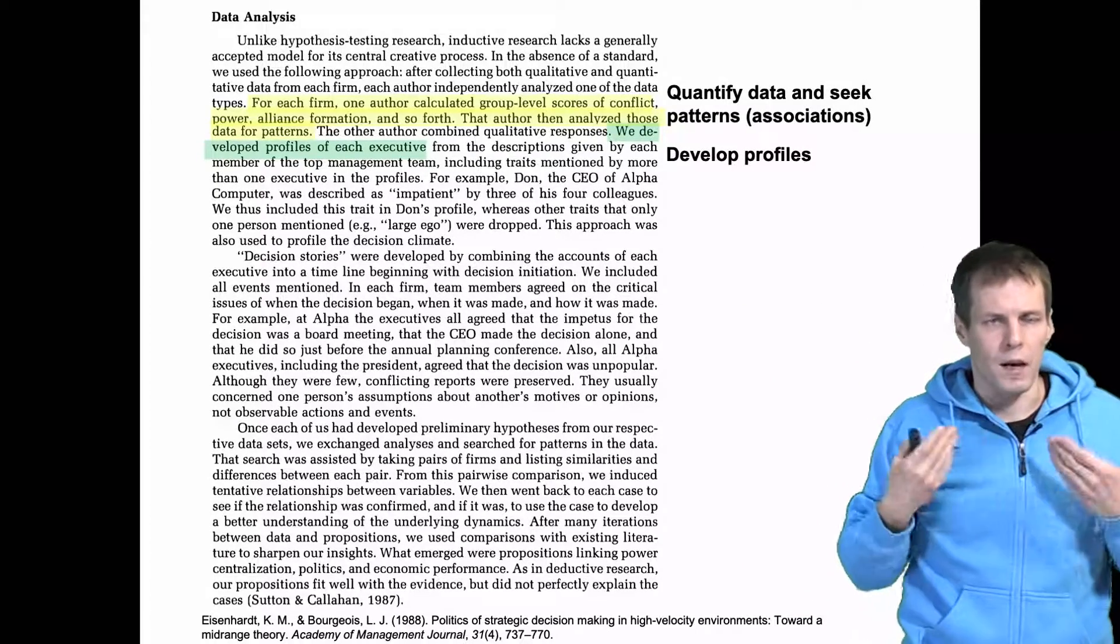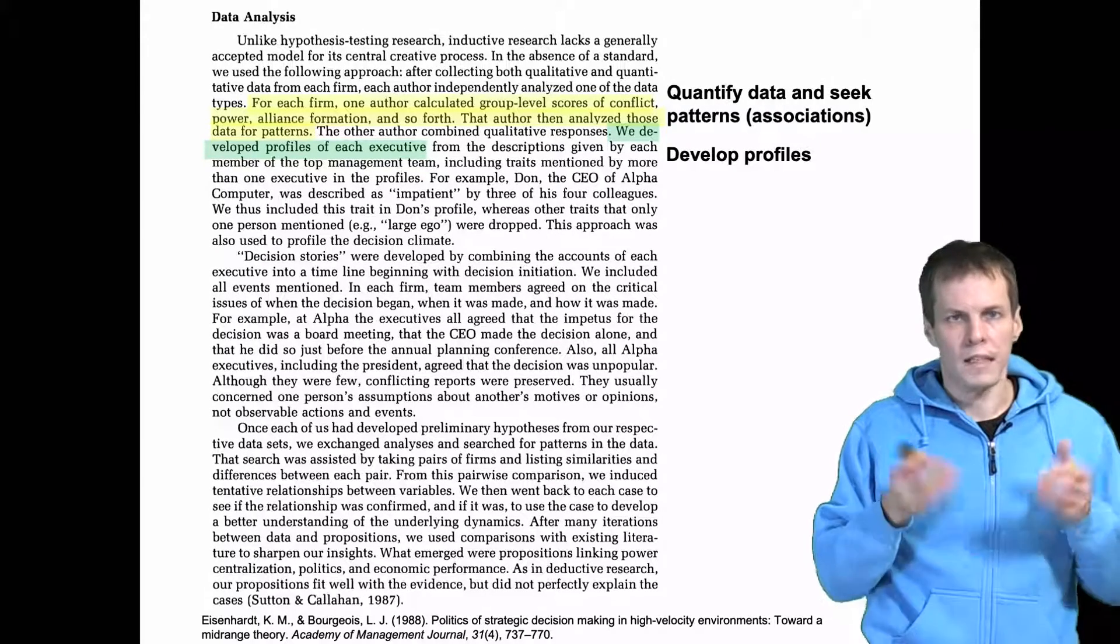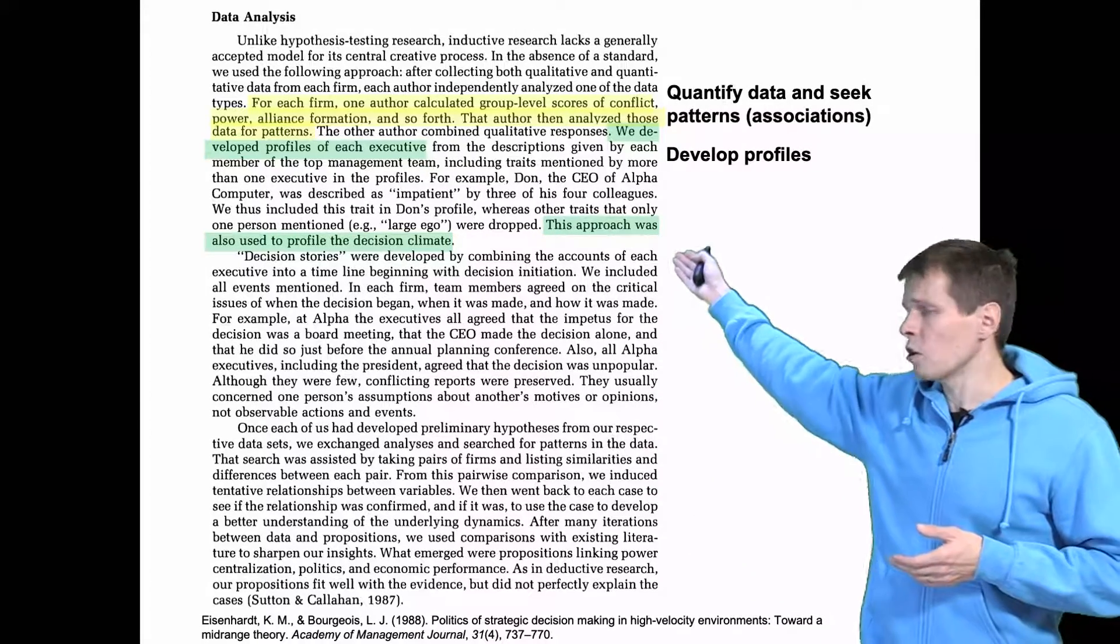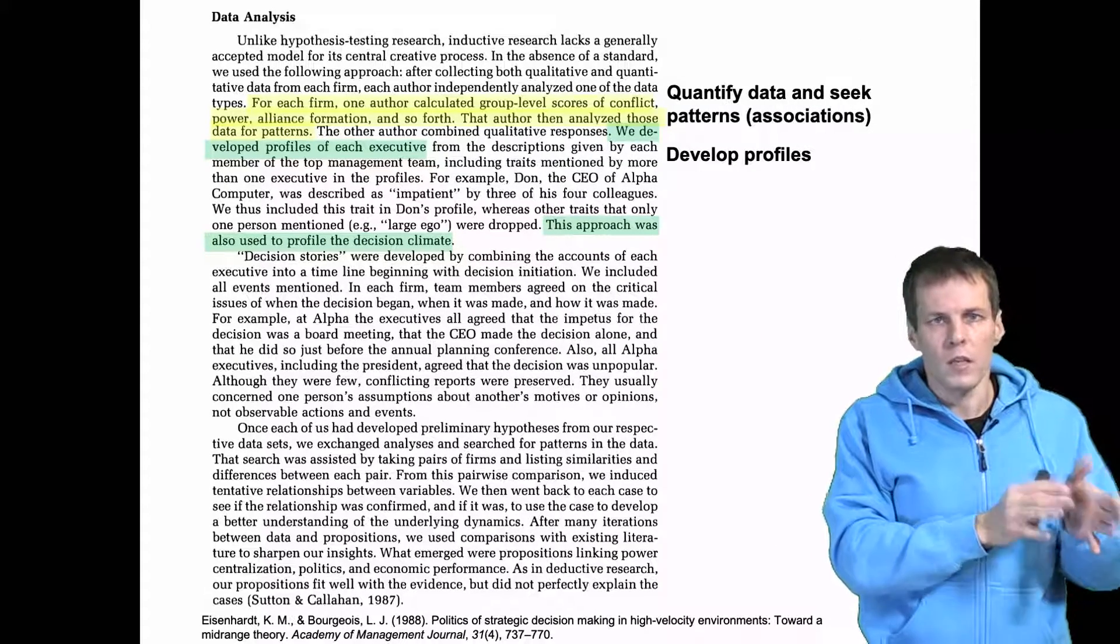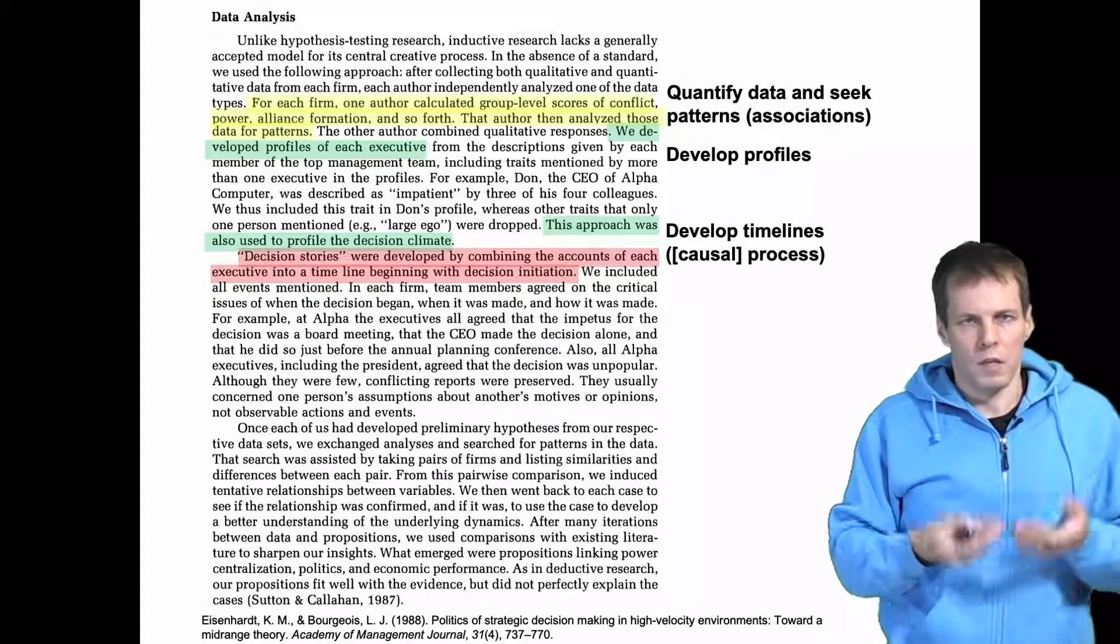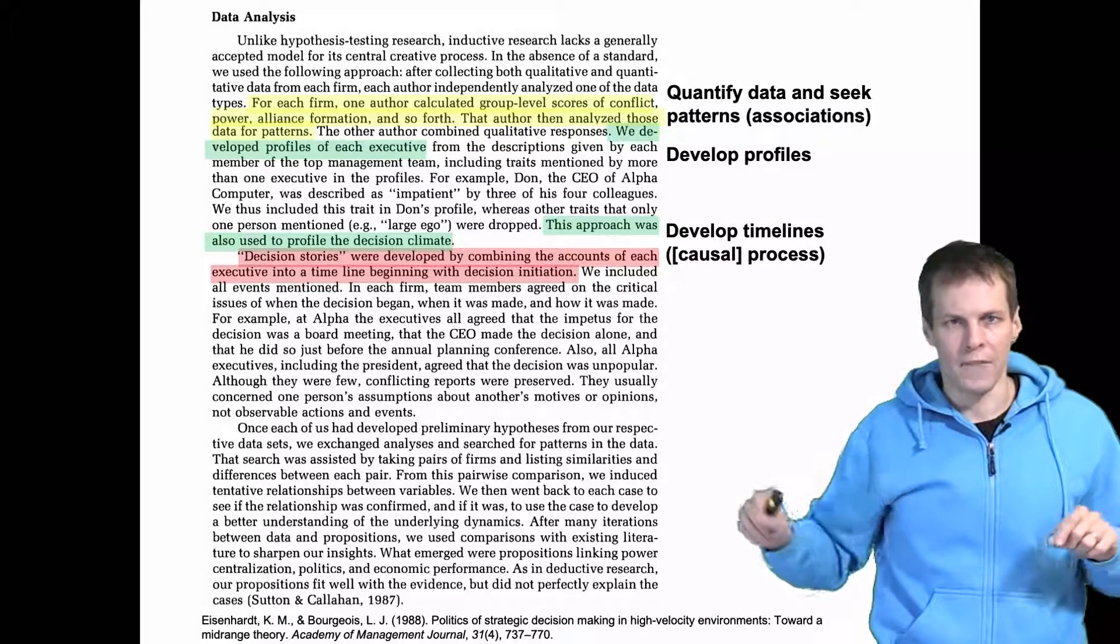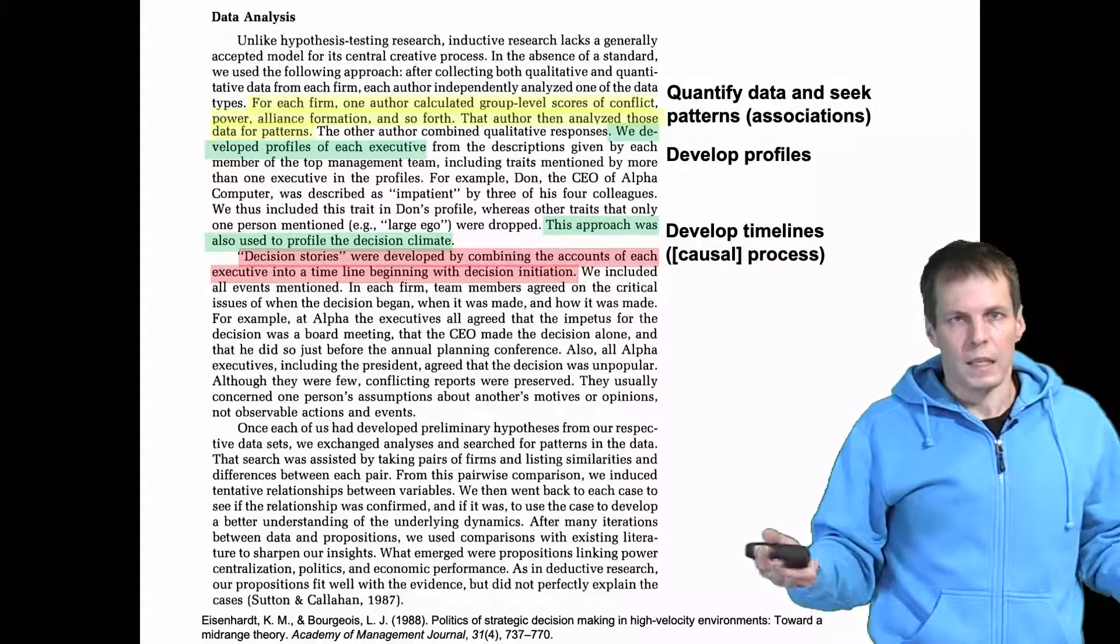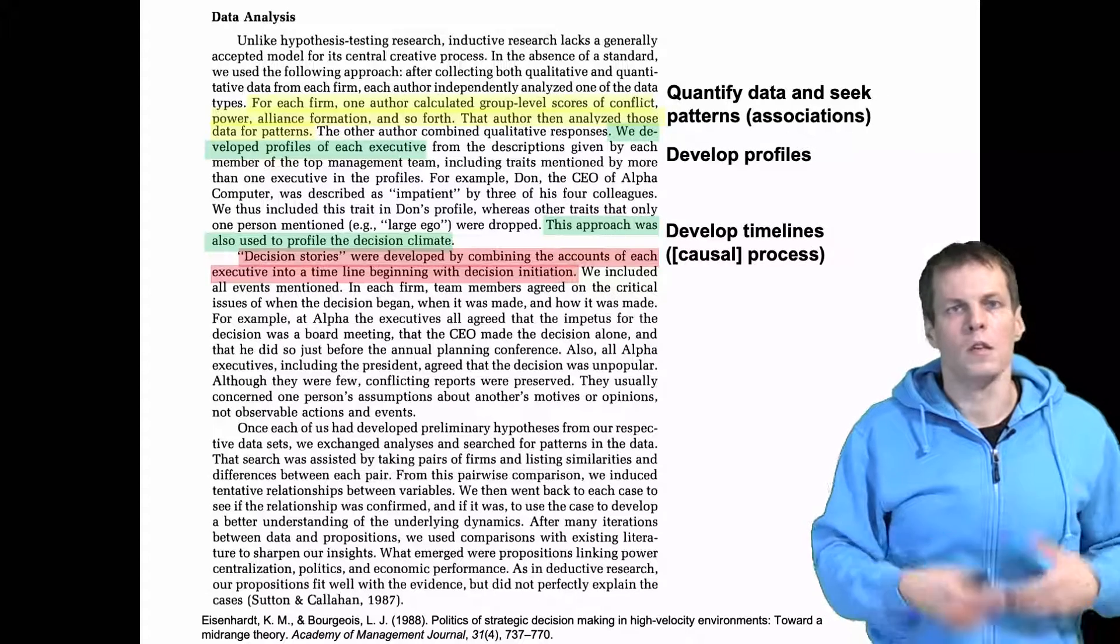Developing profiles is something that Eisenhardt also recommends. So you write a case description for each case or its executive and you can do the same for each decision. So you can write profiles, short descriptions of the key things or key units that you study. Then you develop timelines. You can have a piece of paper that has a timeline, then you put the key events on that timeline and you basically construct causal processes or descriptions of some kind of processes using those timelines.